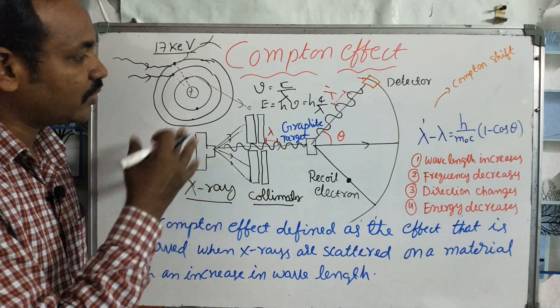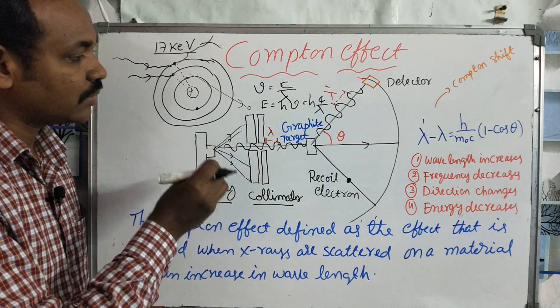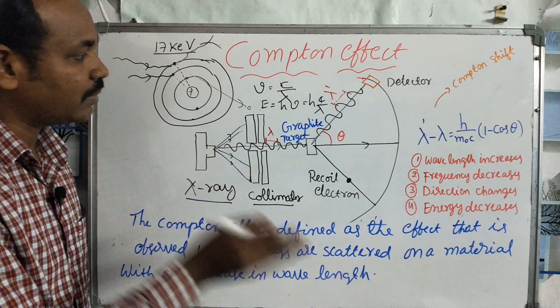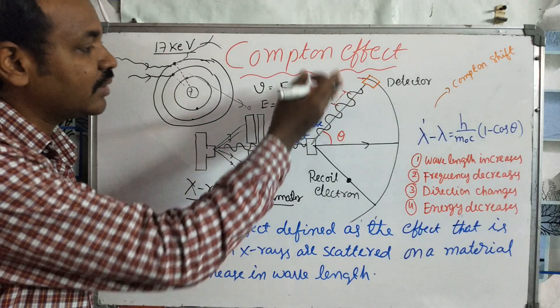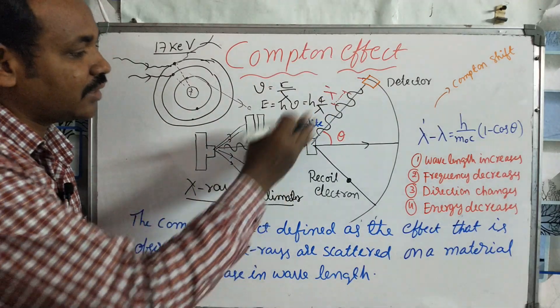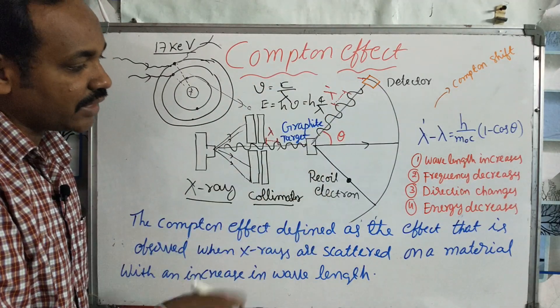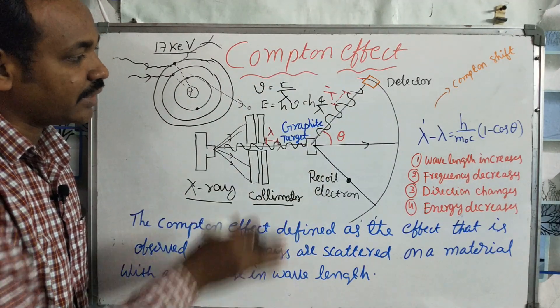The electrons retain some remaining energy after the interaction. The photon gives part of its energy to the electron, and the remaining energy continues as scattered radiation.